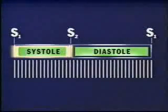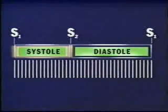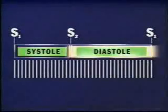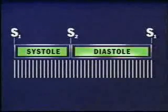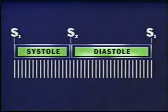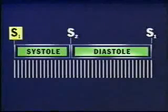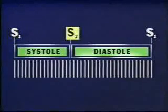Ventricular systole occurs between S1 and S2. Ventricular diastole occurs between S2 and the next S1. Because diastole usually lasts longer than systole, you can identify the two sounds: one, two, one, two, one, two.